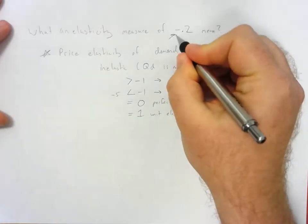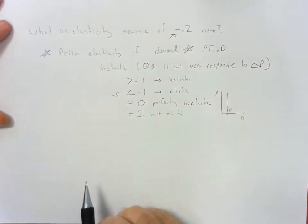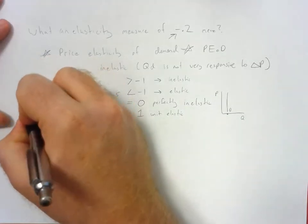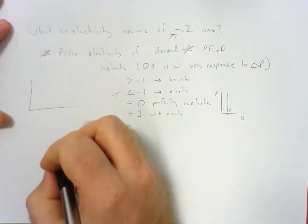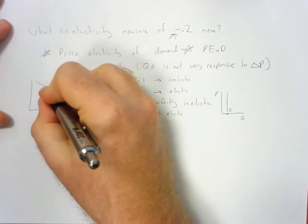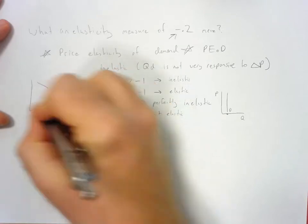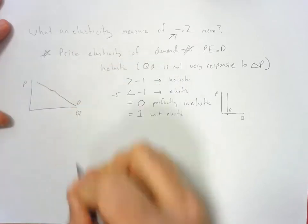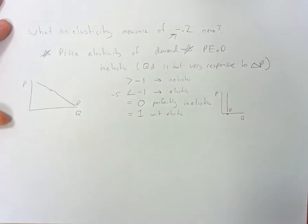So now let's talk about what this negative means while you're looking at this number. So you have a negative 0.2. Essentially what that means is that you have a negative relationship between quantity and price, so you have your standard downward sloping demand curve.